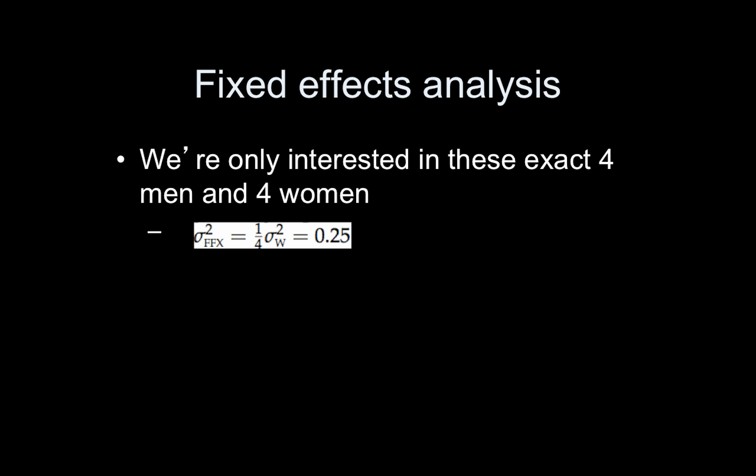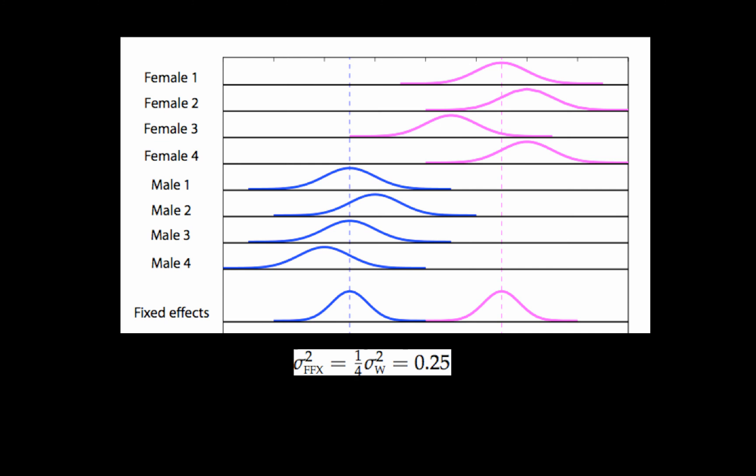So now I can construct the two group distributions based on this fixed effects assumption. The mean is simply the mean of the four values for the males, and then the variance is squeezed in a little bit because it's 0.25. Likewise, I have the mean here for the females, same variance because I had the same number of females, 0.25. Based on these two distributions, since there's very little overlap, we would conclude that the hair length for these four females is significantly longer than the hair length for the four males.